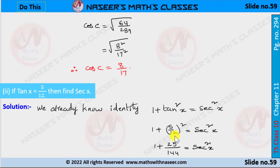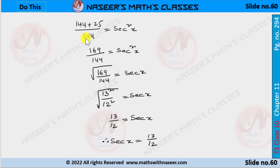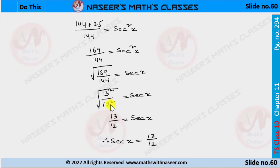5 square means 25 and 12 square means 144, so it becomes 1 plus 25 by 144 is equal to sec²x. The denominator becomes 144 and the numerator becomes 144 plus 25, which gives 169. So 169 by 144 equals sec²x. Taking the square root, 169 is 13 square and 144 is 12 square, so sec x equals 13 by 12.